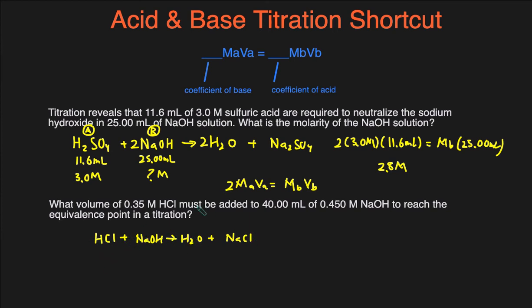So then we can transfer the numbers underneath. So this will be 0.35 molar. This right here will be 0.45 molar, because that's the molarity of the base. And then the volume of the base was 40.00 milliliters, and we're trying to solve for the volume of the acid. Then we can write the equation. So this is MaVa, and this right here is MbVb, and there has a coefficient of 1, a coefficient of 1. So if we cross it, it'll just still be MaVa equals MbVb.